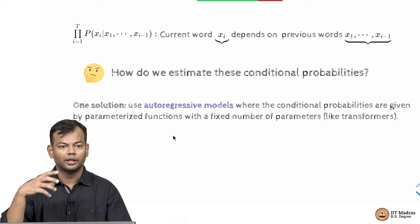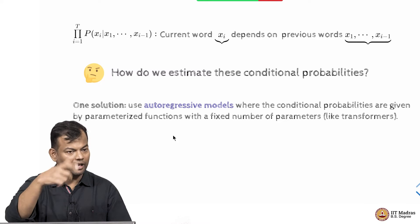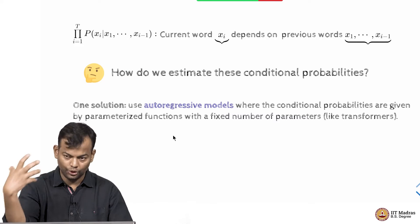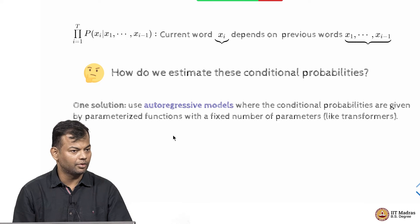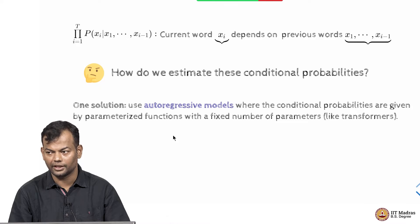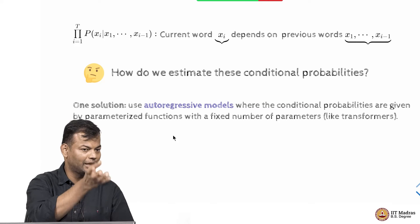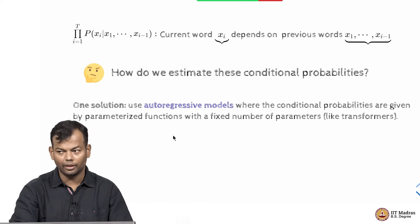It has these parameters theta. It takes the input, does the transformations that the function has to do, using the parameters that the function has and at the end predicts the probability distribution and that is exactly what we have been doing with the transformer architecture or even the recurrent neural networks and feed forward networks before that.